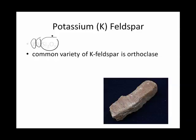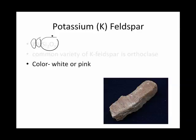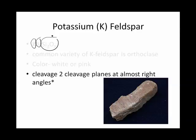A very common variety of potassium feldspar is orthoclase. It could be either white or pink. It breaks in two cleavage planes, almost at right angles.